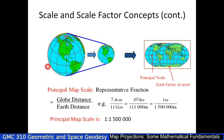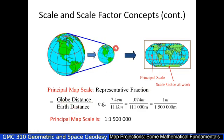Regarding scale and scale factor: we normally take the globe, make it smaller to the scale we want to use, and then project it onto a map. Where the cylinder, cone, or plane touches the globe is where you'll have your principal scale. That scale is normally given as a representative fraction — globe distance divided by earth distance. For example, one meter to one million five hundred thousand meters gives a fraction of 1:1,500,000.